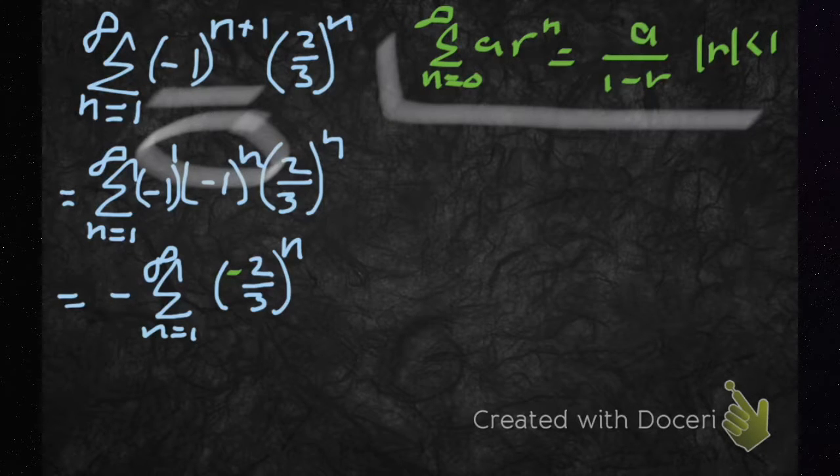Because that's going to converge when our r is smaller than 1. So I spit that 1 out and I put it over here.